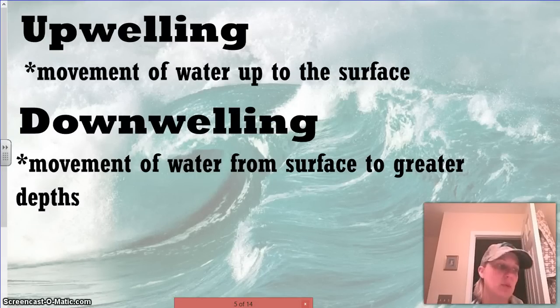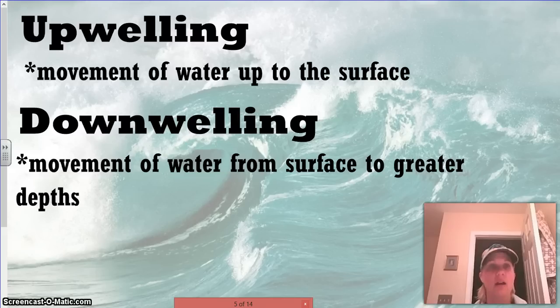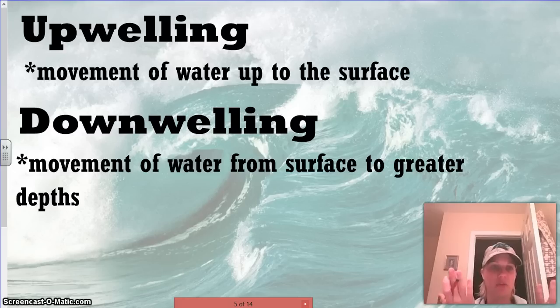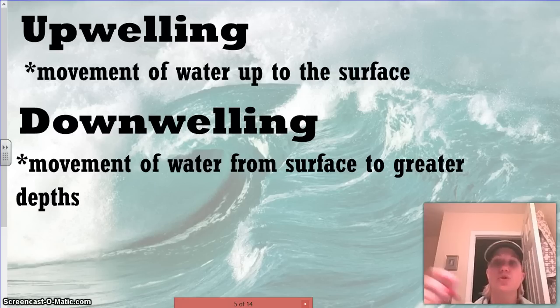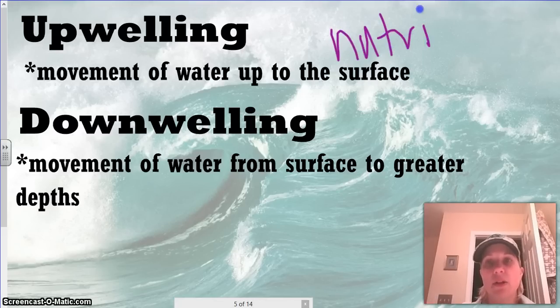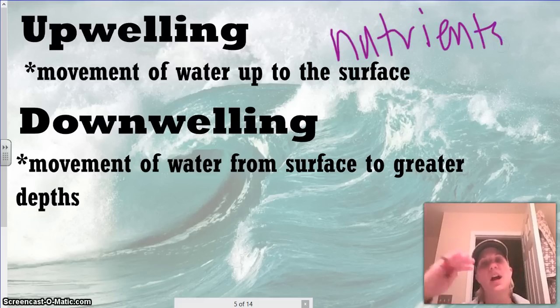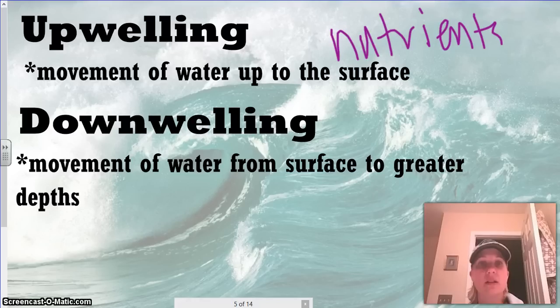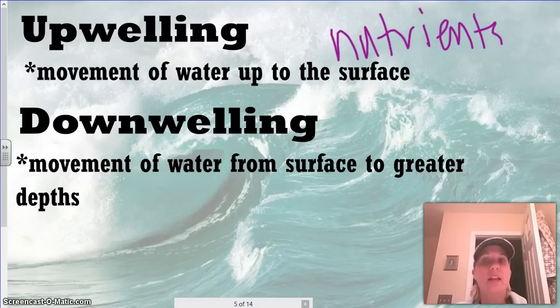With that thought process in mind, we have terms called upwelling and downwelling. Upwelling is movement of the water up to the surface, and this movement is going to bring nutrients up to the surface and towards the more shallow parts of the water. This is why you've got coral reefs. If you ever looked at a coral reef, it's beautiful, full of lots of color and life because it's got a lot of nutrients to support that.